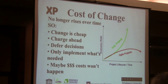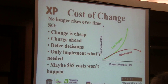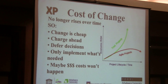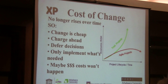In traditional projects, as they go further down, the risk goes up. But with agile projects, the risk leaps down as you go on because you have something behind you that works — you've tested it. The cost of change does not rise over time. With big cathedral projects, you can't change because it's too far in. But with XP, change is cheap. You can charge ahead and defer decisions.